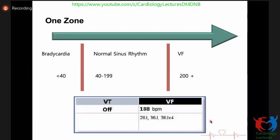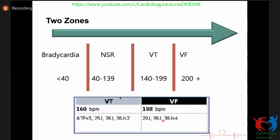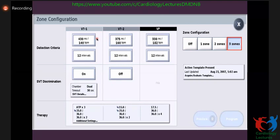Here is an example of a single VF zone — the VT zone is turned off. From normal rhythm, VF is defined at more than 200 or 180 beats per minute depending on programming, and you set the joules for the shock. For two zones, you can program ATP or overdrive pacing three times before going to shocking, and escalate each shock from 25 to 36 joules. Same approach applies for three-zone ICD programming.